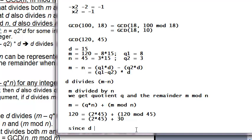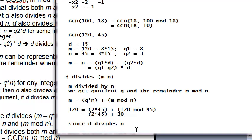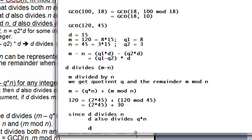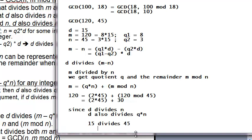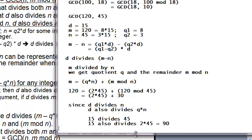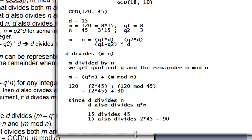Since d divides n, d also divides some quotient q times n. For example, 15 divides 45, so 15 also divides 2 times 45, which is 90.